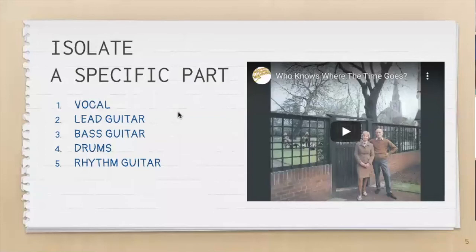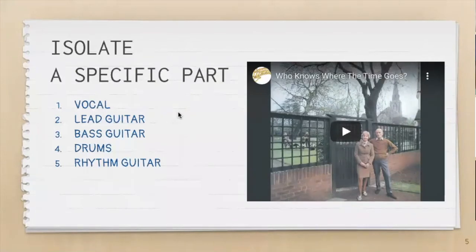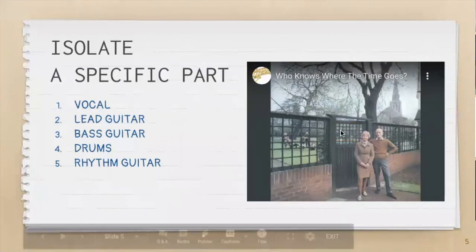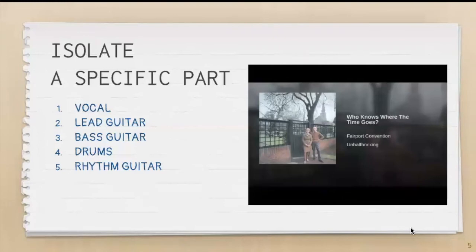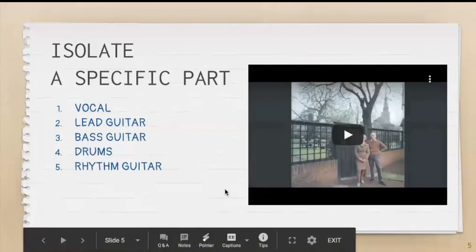The other thing I want to ask you to do is look down at the time right now so you can come back to this spot and listen to it again. So instead of listening to it five times together, we'll listen to it one time together, and then you can come back and do these other listenings. Here's 'Who Knows Where the Time Goes' by Fairport Convention.